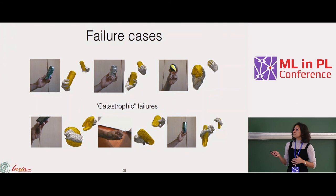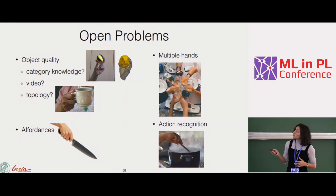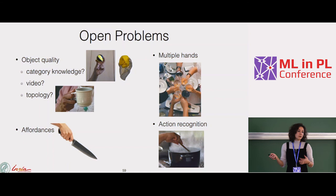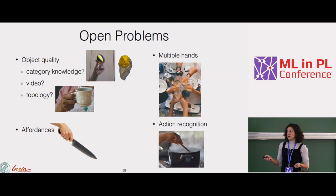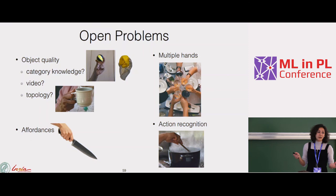Open problems include object quality — we don't know the category. If we had more than one image, like a video, we could improve reconstruction quality since a video is a multi-view setup: as you move your hand, you see more sides of the object. We also need real grasp statistics for affordances. Currently it's a single hand with a single object, but extending to both hands interacting with objects is a next step.